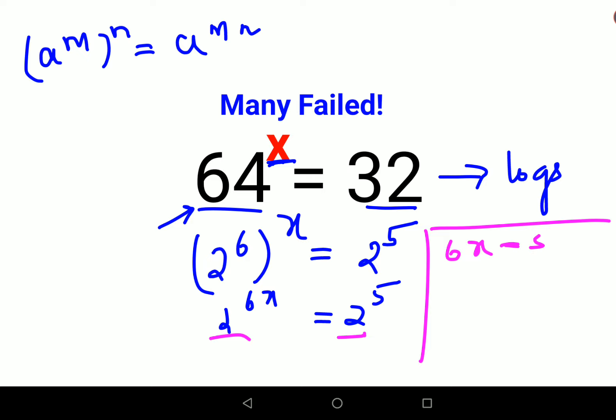So 6x equals to 5. Now in order to find the value of x we will divide both sides by 6. So value of x comes out to be 5 by 6.